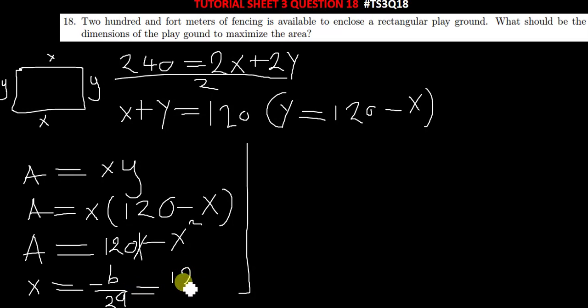So it will be negative 120 over 2, and our a is negative 1. So the value of x at maximum is simply 60 meters. So one dimension at maximum is 60 meters.